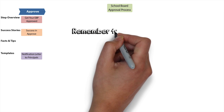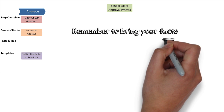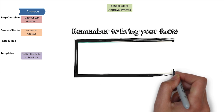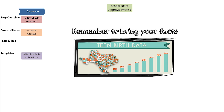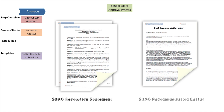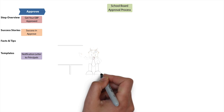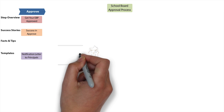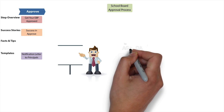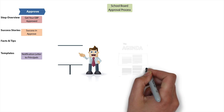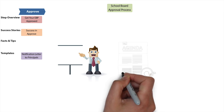Remember to bring your facts. Let them know the teen birth rate in your district to show the magnitude of the problem. And let them know how long you've been working on this issue by presenting your SHAC resolution statement and recommendation letter. A formal presentation to your school board may be required. If it isn't, see if you can get on the agenda to do a presentation.